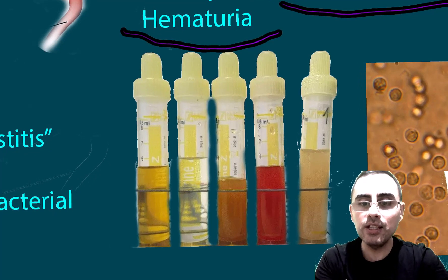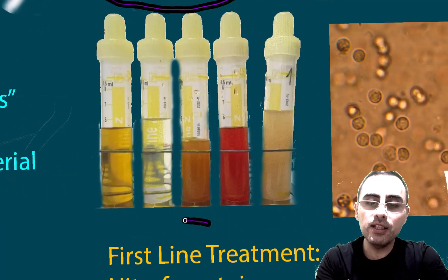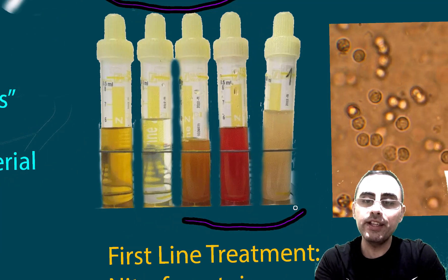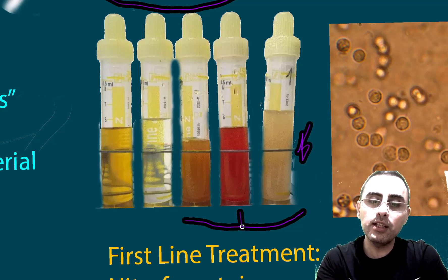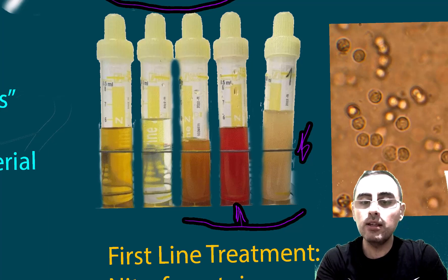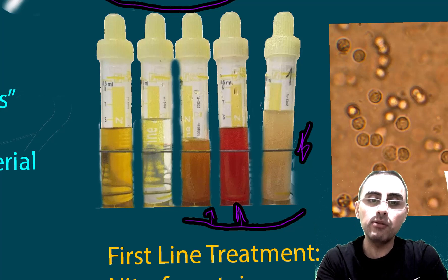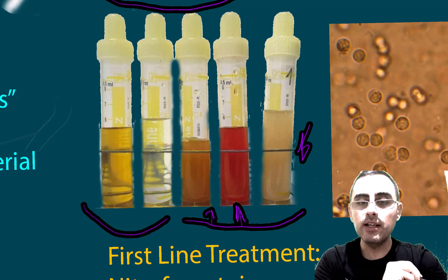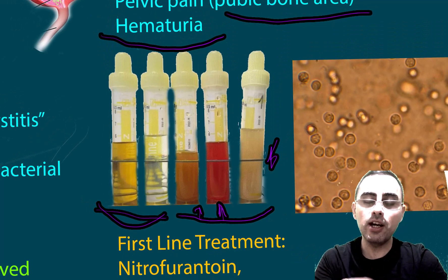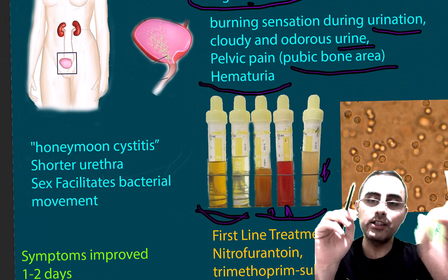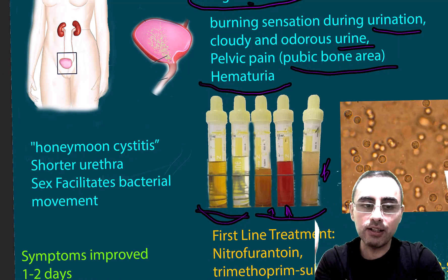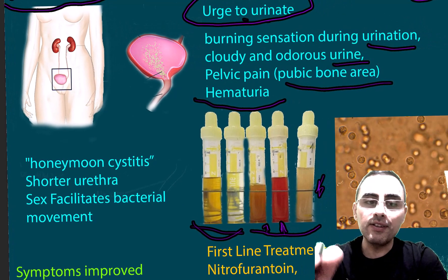Looking at urine samples, if the urine is cloudy or shows signs of hematuria — blood in the urine — there is a possibility of urinary tract infection. Clearer urine samples indicate a lower chance of UTI. This is how you can differentiate, though of course it needs more practice.